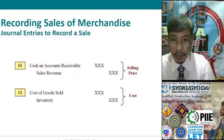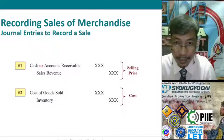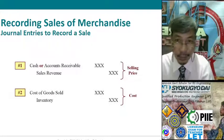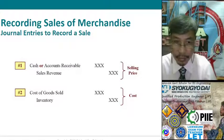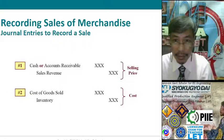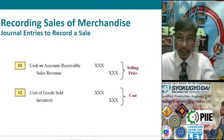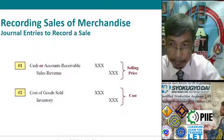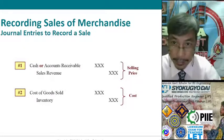Because we are doing it in the Perpetual Inventory System, every time we have a sale, we will counter it with the cost of goods sold. So Cost of Goods Sold is debited, and Inventory is an asset — we decrease the number of our inventory, so decrease asset means credit. That is how we record it in our journal entries.